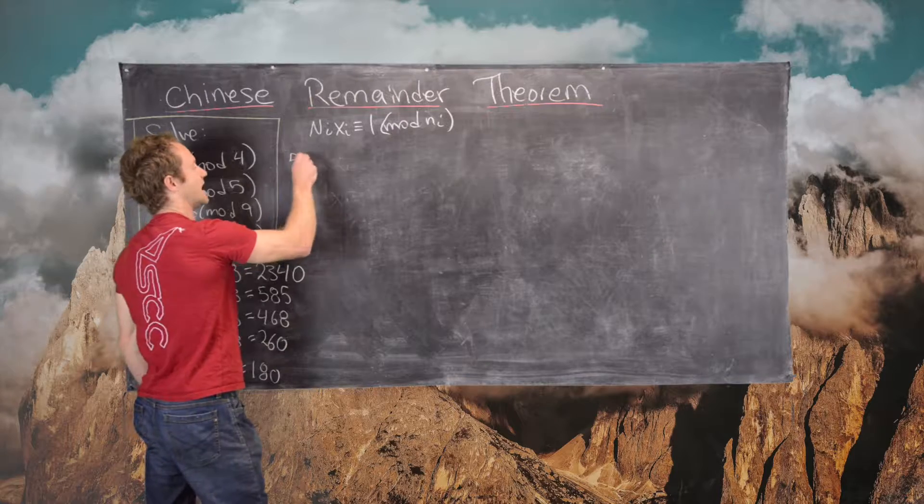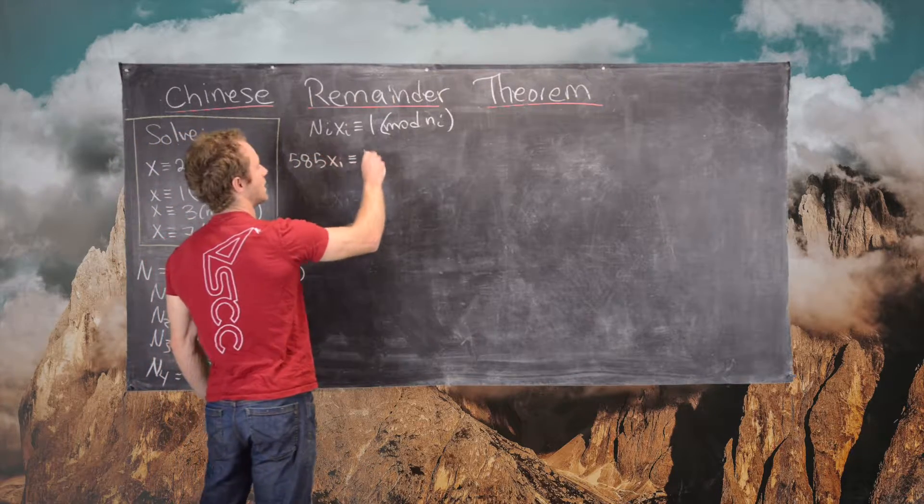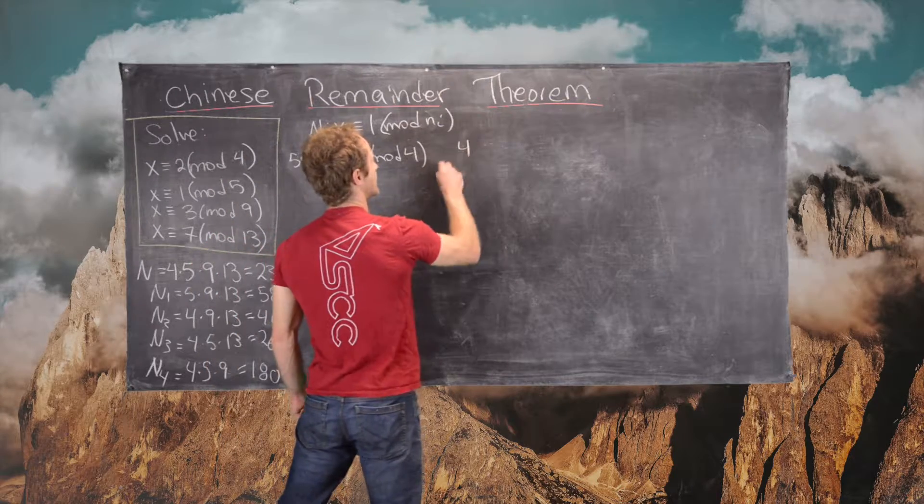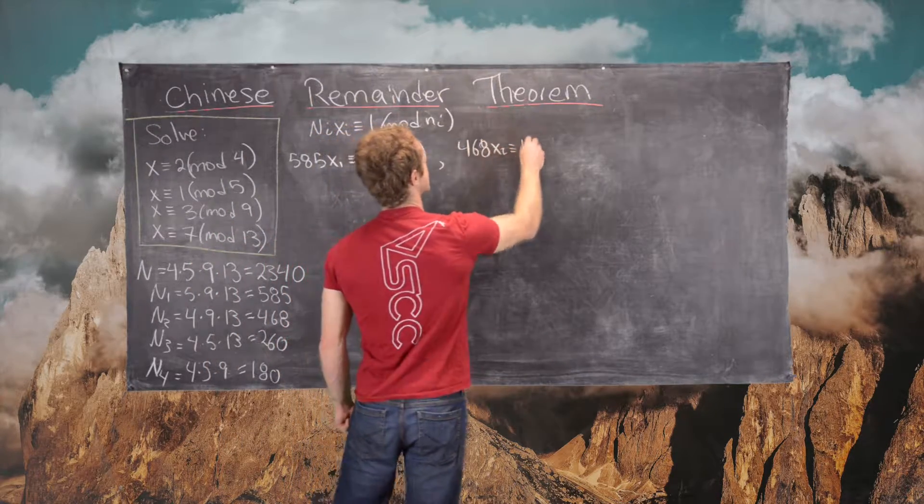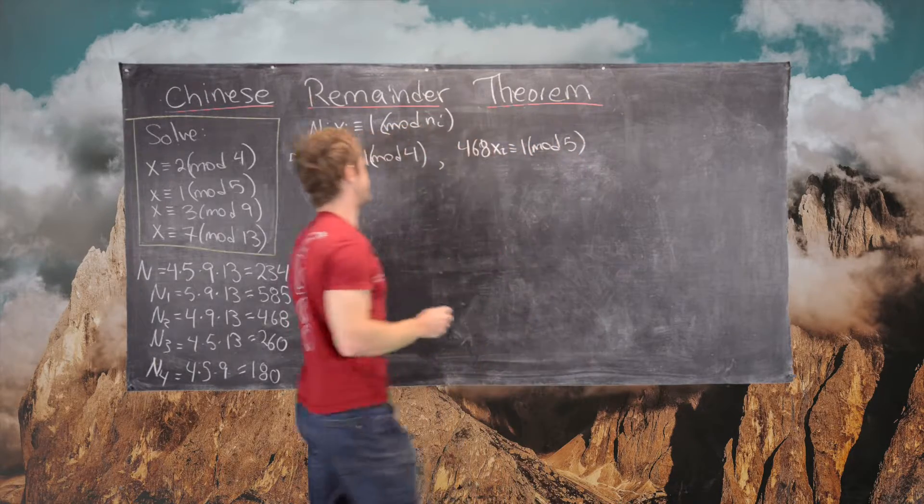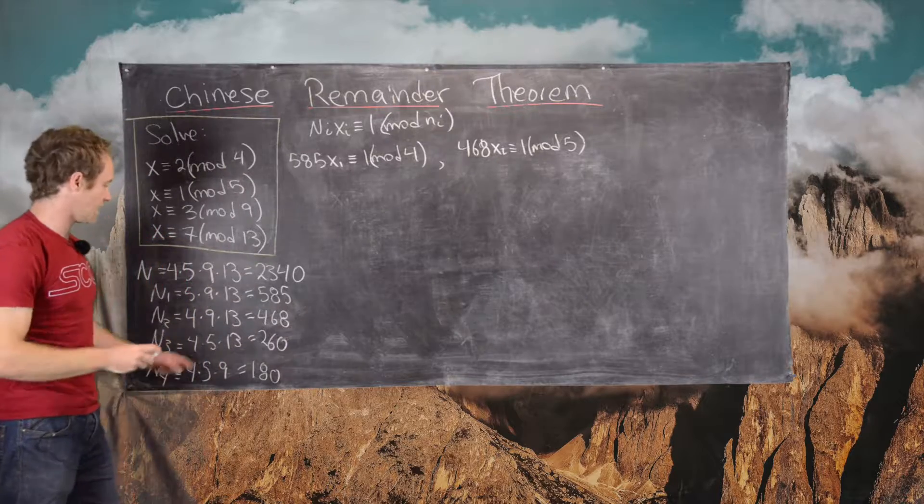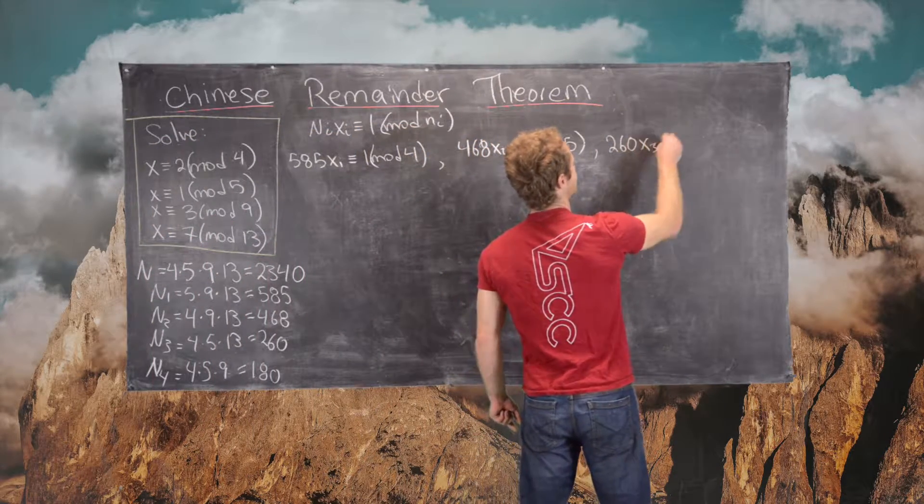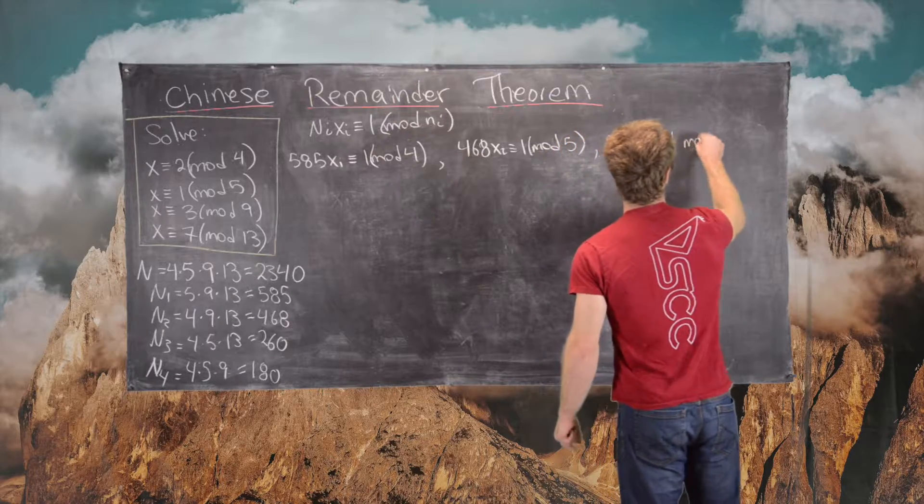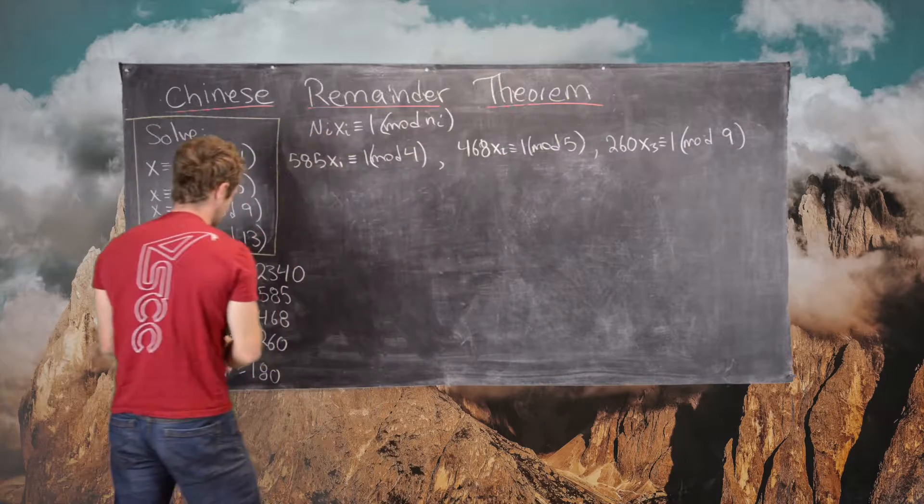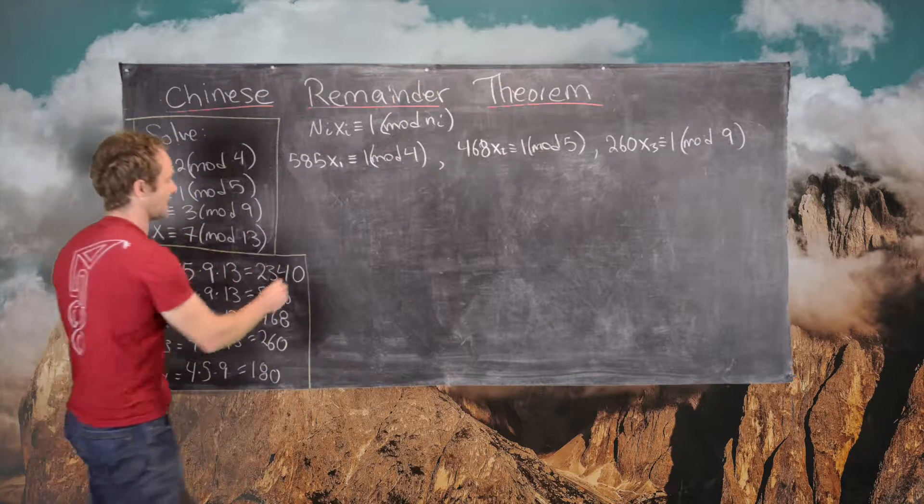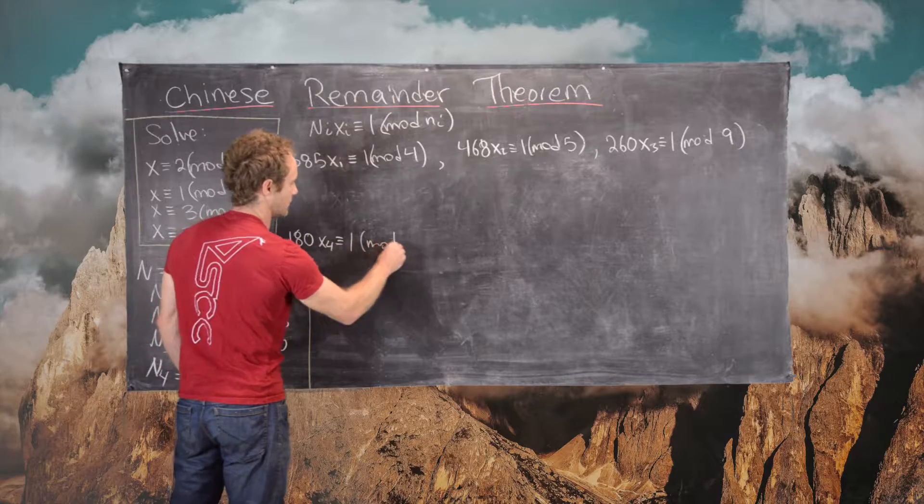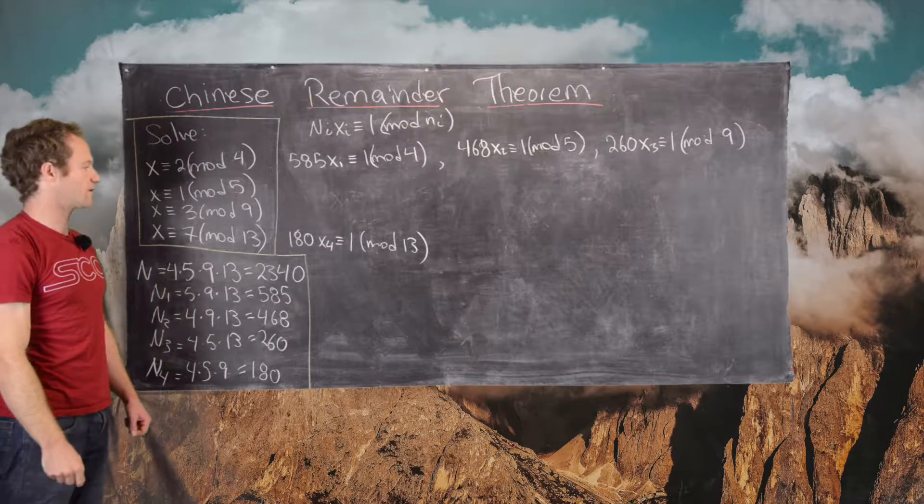We need to solve 585 X1 congruent to 1 mod 4; 468 X2 congruent to 1 mod 5; 260 X3 congruent to 1 mod 9; and 180 X4 congruent to 1 mod 13. So we have these four things to solve.